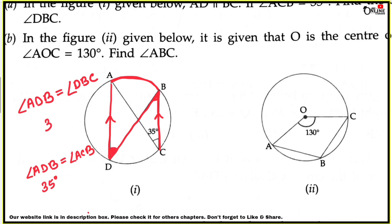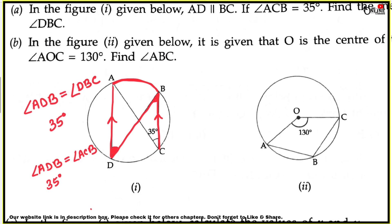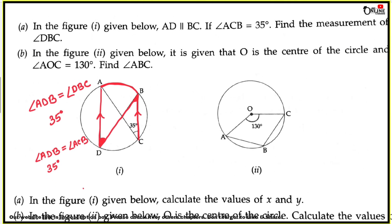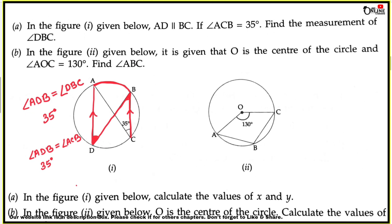Since AD and BC are parallel, angles ADB and DBC are alternate angles. Therefore, DBC equals 35 degrees.